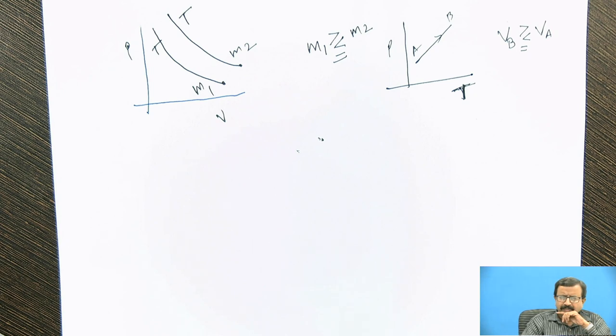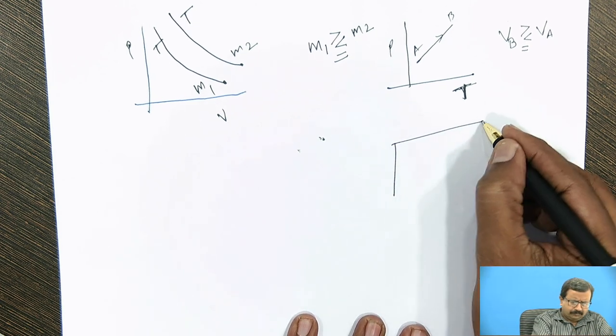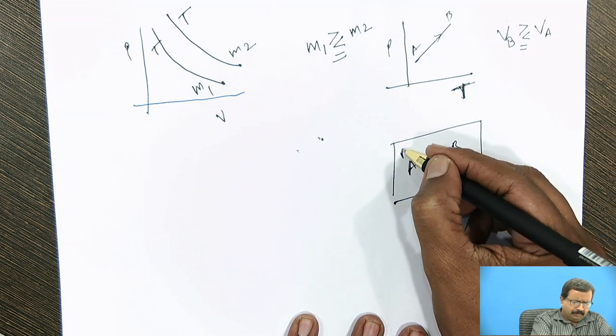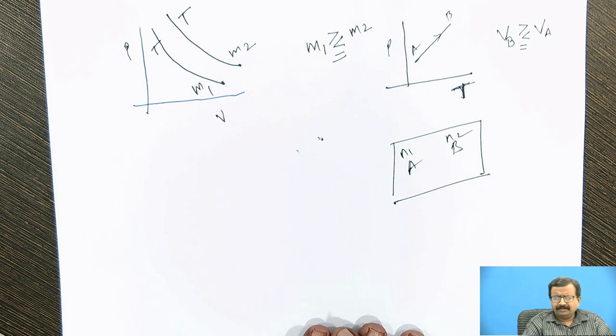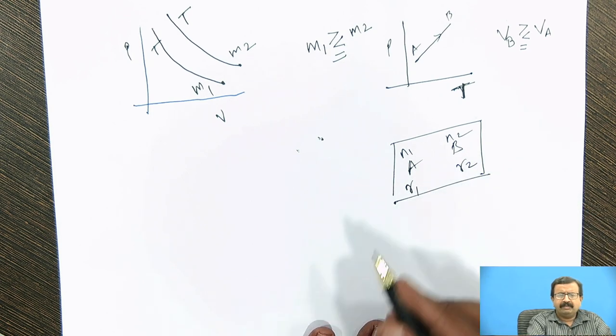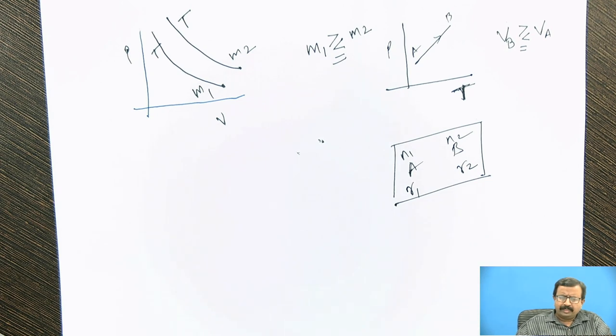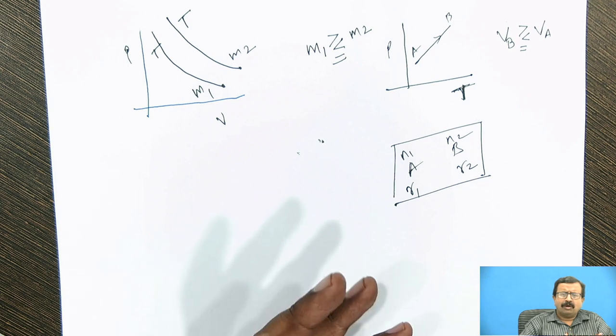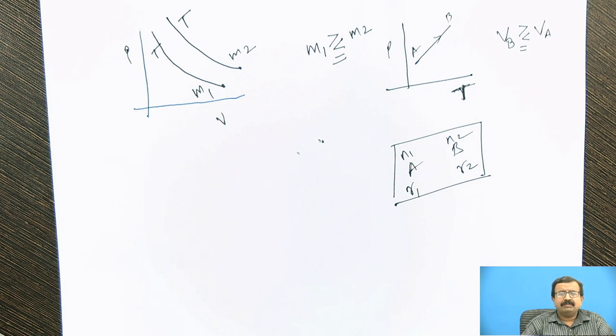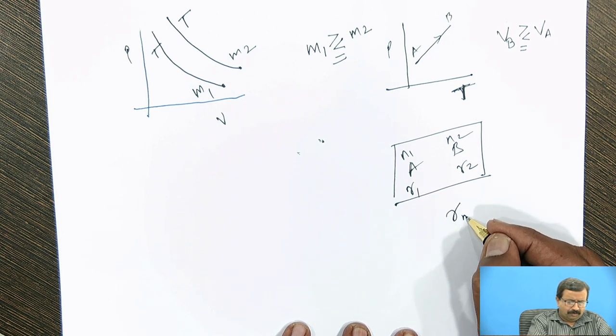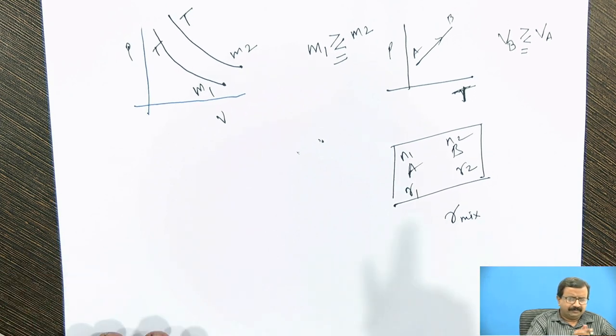Now we will see how we will evaluate the specific heat when we have been given a mixture. Whenever we have been given a mixture, there is a gas in which there is gas A and gas B. The number of moles are N1 and N2. Each gas has its own adiabatic index, gamma 1 and gamma 2. Then after mixing them together, what happens? It is like mixing warm water and cold water—you will get some different temperature. So if I mix them together, my question is: what will be the adiabatic index of the mixture? I have to find out the gamma for the mixture.